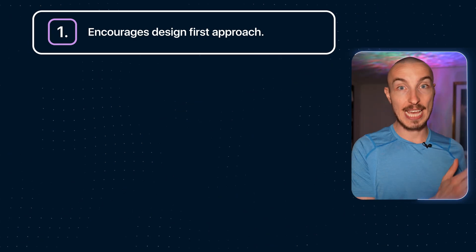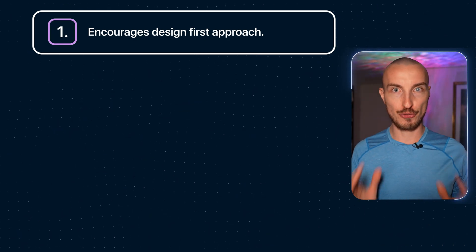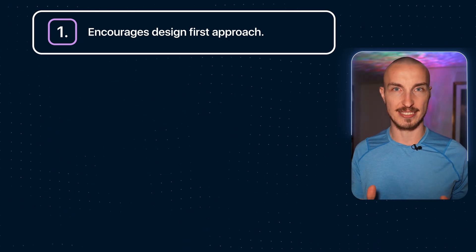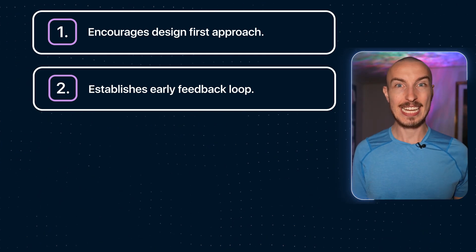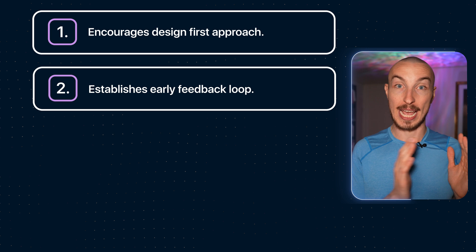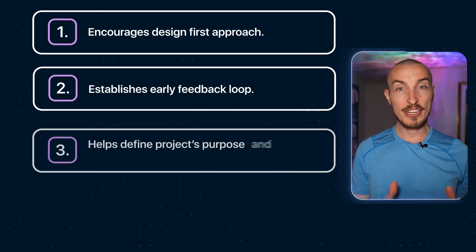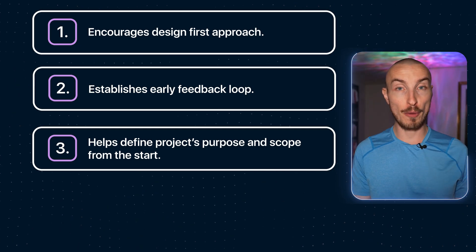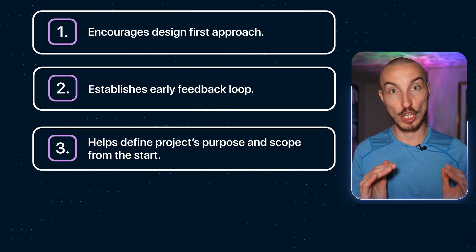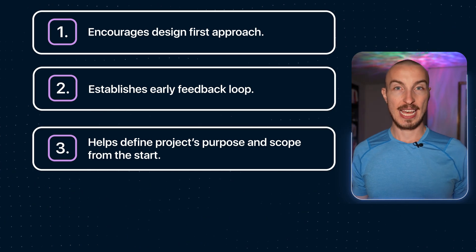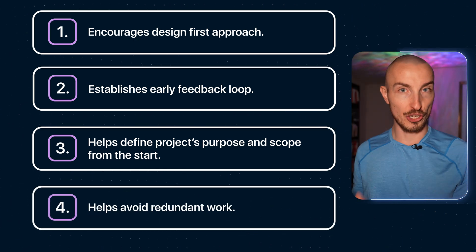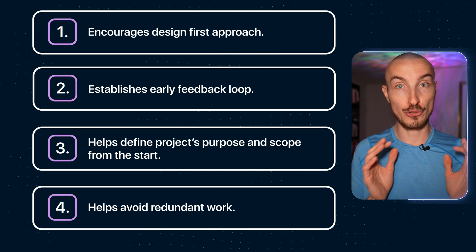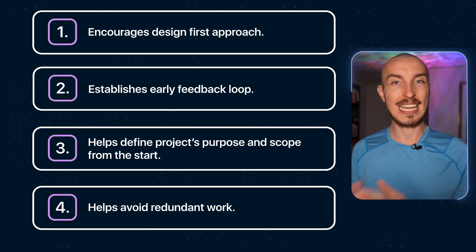README driven development has a ton of benefits. It forces you to think about the inputs and the outputs first. By focusing on your API upfront you prevent implementation details from leaking into your API design. Writing out the API first lets your co-workers critique it and discuss technical design implications. The goal is to come up with an API that offers the best developer experience. RDD helps to define the project's purpose and scope from the start. This clarity reduces bugs caused by a misunderstanding of the features being built. It can also help to prevent scope creep, keeping the project focused on its intended goals.